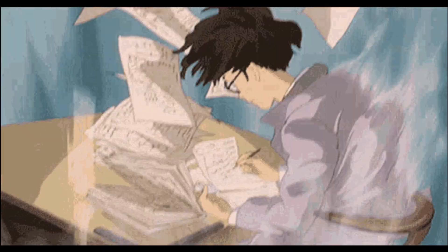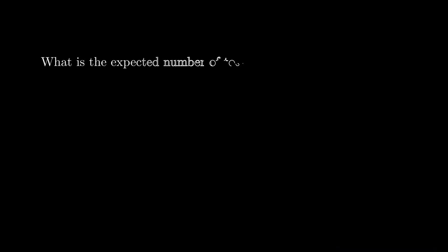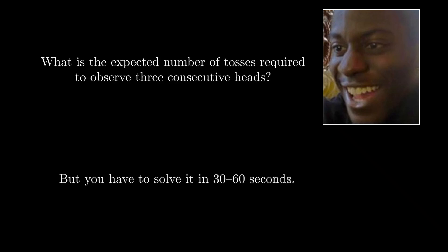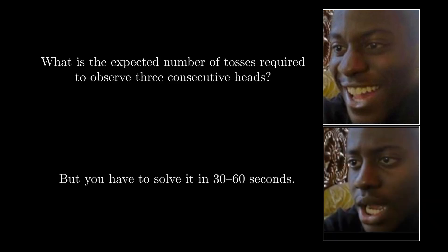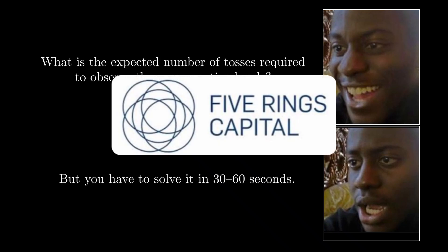Finally, you enter the interview room, and to your surprise, you're asked a medium difficulty problem you've seen before. You're happy — this is your moment. Then comes the twist: you have 30 to 60 seconds to solve it. One interview round at Five Rings consists of 15 such easy to medium level problems, each to be solved within 30 to 60 seconds. If you're not prepared for this rapid-fire format, you might struggle to keep up.